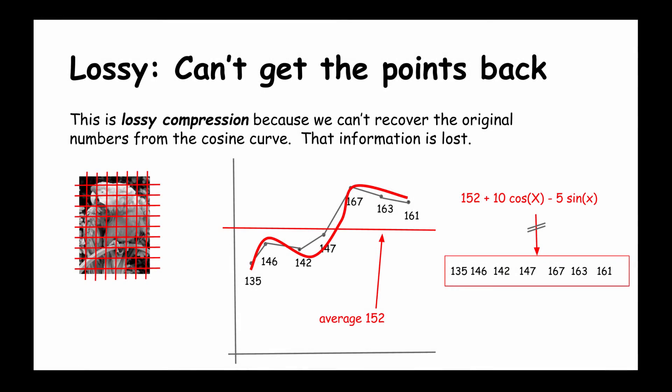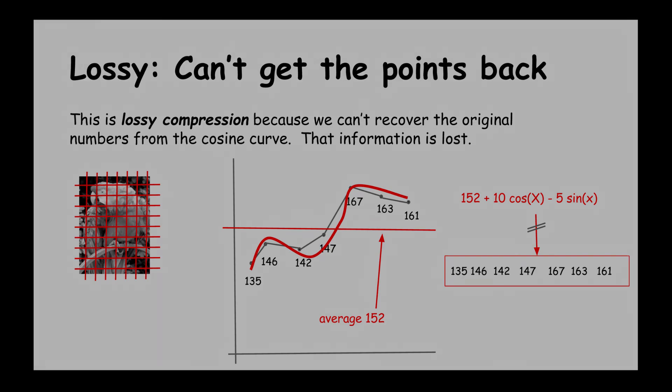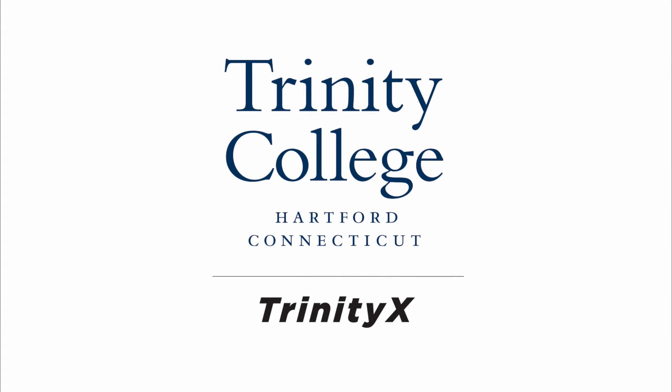Of course, as you can see easily here, this is lossy compression because we can't recover the original numbers from the cosine curve. That information is lost forever. That's why we call JPEG a lossy compression algorithm.